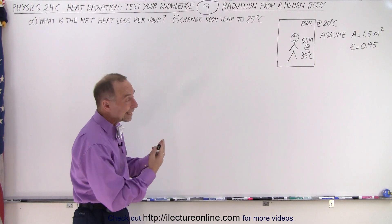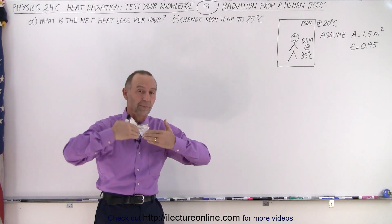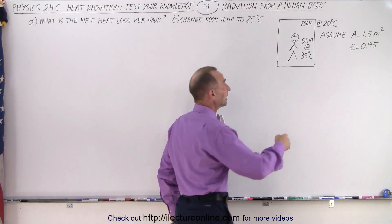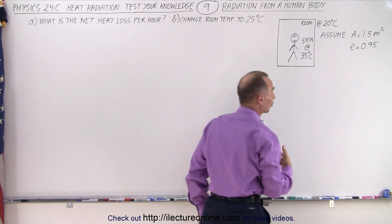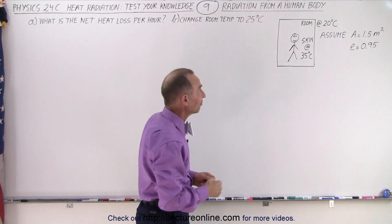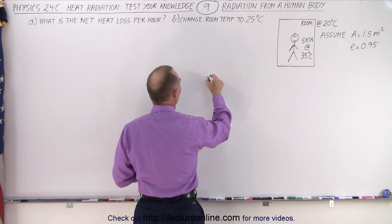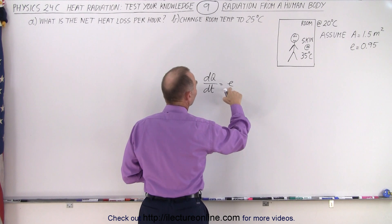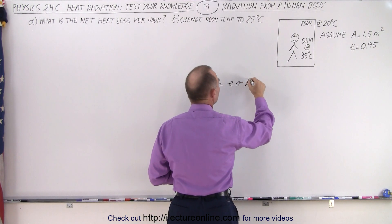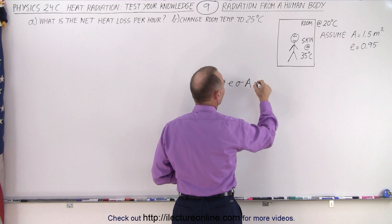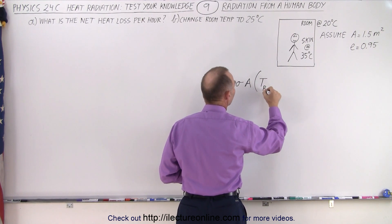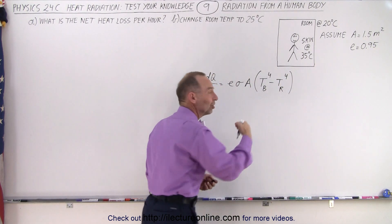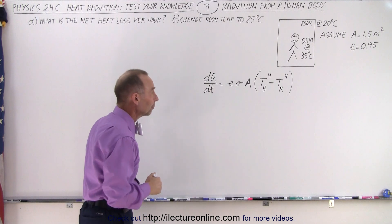We're talking about the net heat loss, because obviously the body would receive some energy from the room as well. So let's write down the equation, assuming that the surface area of the body is 1.5 square meters and that the emissivity is about 0.95. The net heat loss — that would be dQ/dt — equals the emissivity times sigma times the surface area, times the temperature of the body to the fourth power, minus the temperature of the room to the fourth power, because that is the amount of energy the body would receive back from the room.